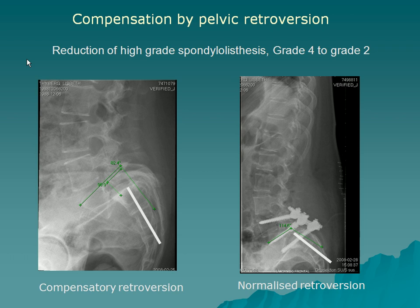The most typical case for pelvic retroversion, as any orthopedic surgeon knows, is high-grade spondylolisthesis. These patients have a vertical sacrum — that's textbook orthopedic surgery. They have to compensate; if they don't, they're going to fall forward. So they compensate by retroversion of the pelvis.